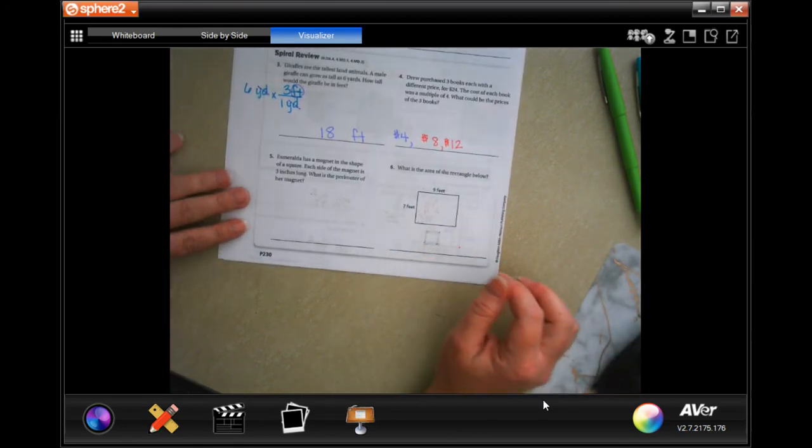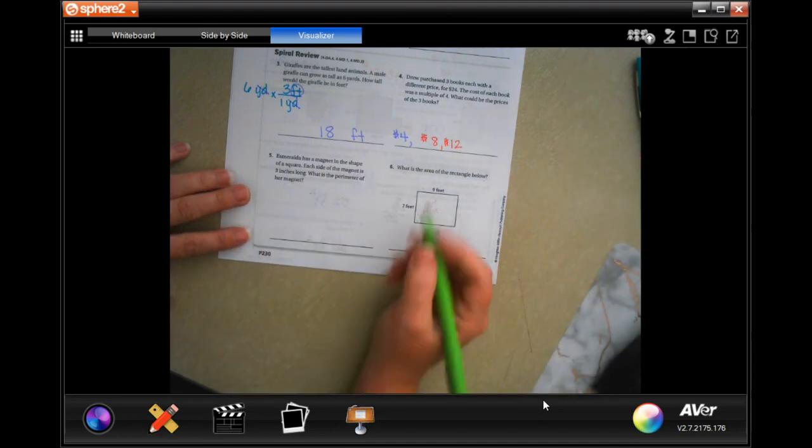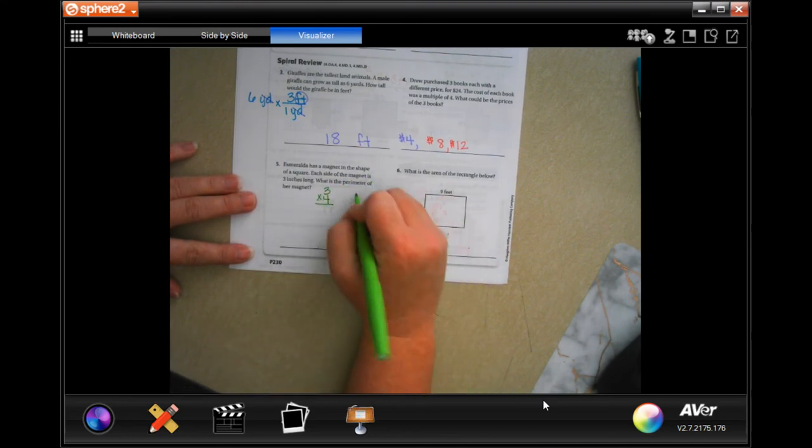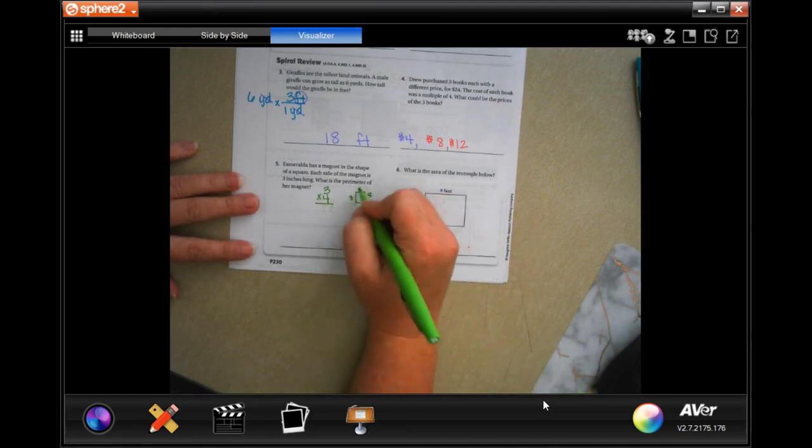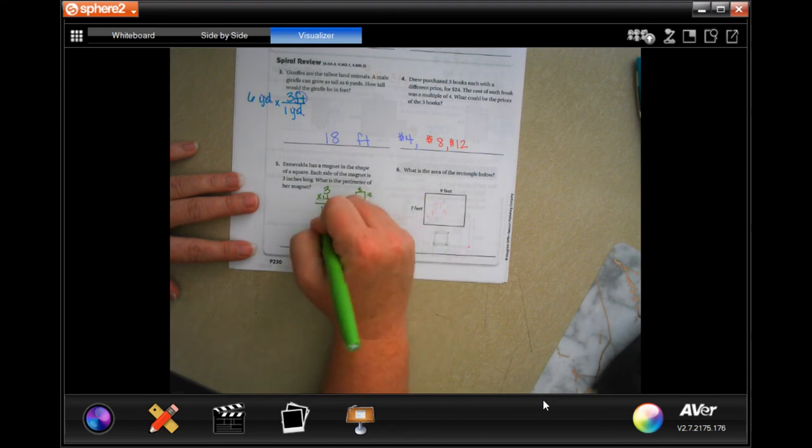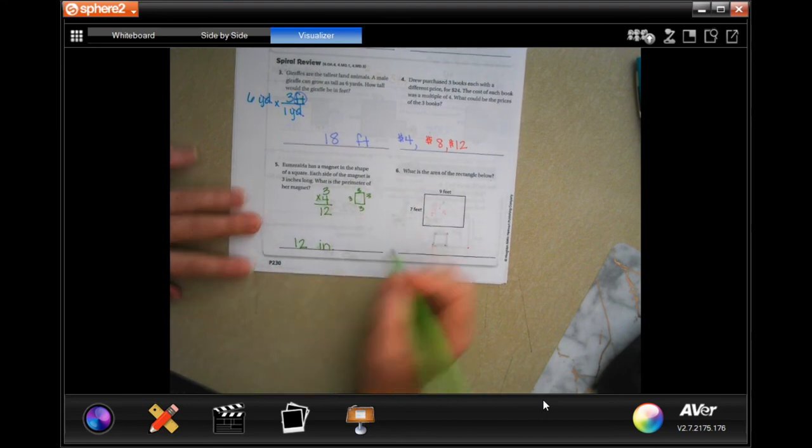Esmeralda has a magnet in the shape of a square. Each side of the magnet is 3 inches long. What is the perimeter? So 3, and there are 4 sides to a square. This is where we're adding them up. So I'm not doing 3×3, which would give me the area, I'm doing 3 times 4 because there's 1, 2, 3, 4 sets of 3. Twelve, so 12 inches, done.